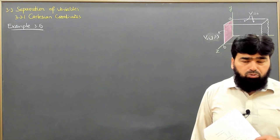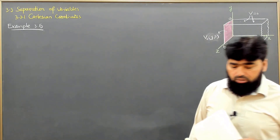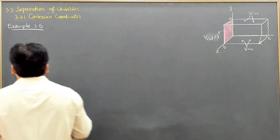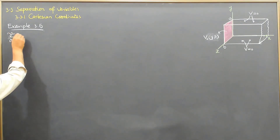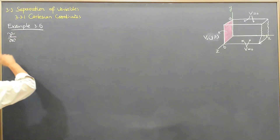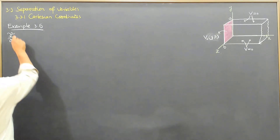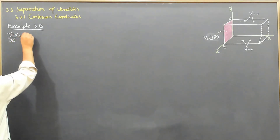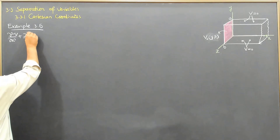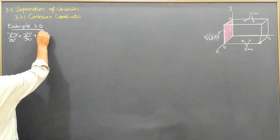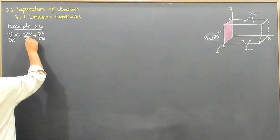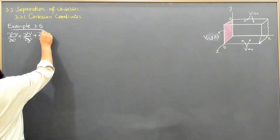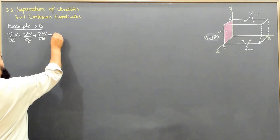This is a three-dimensional problem from its geometry. We set up Laplace's equation: the partial second derivative of V with respect to x squared, plus the partial second derivative of V with respect to y squared, plus the partial second derivative of V with respect to z squared, equals zero.